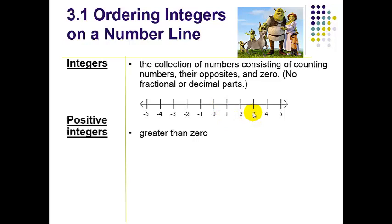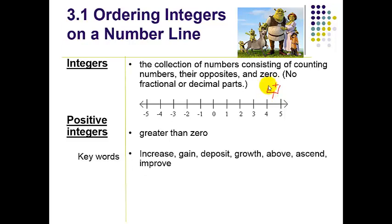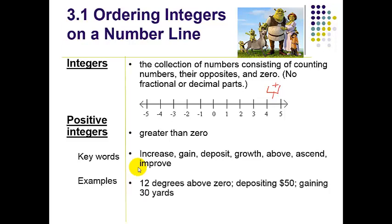We have our positives, and those are going to be numbers greater than zero. I like to put a little field goal over here, so the positives would always want to go to the right. Let's look at some of the key words that we have for positive numbers. You're definitely going to want to write these down. When I talk about increase, if I gain money into my account, deposit money means to put money into your account like a bank account. Growth, the tree grew five feet over the summer, above sea level, ascend, so the plane ascends into the sky, and improve. These would all represent things that we would consider positives.